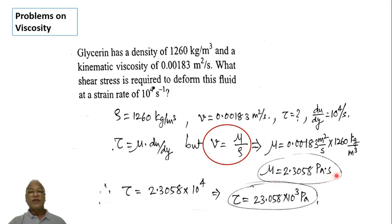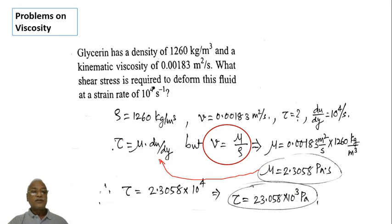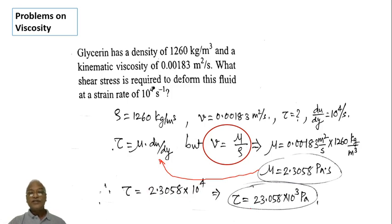Dynamic viscosity is equivalent to Pascal second, as seen in earlier lectures. So mu comes out to be 2.3058 Pascal second. Applying this into tau equals mu into du/dy: tau equals 2.3058 Pascal second multiplied by 10 raised to 4 per second. The seconds cancel, leaving tau equal to 23.058 into 10 raised to 3 Pascals.